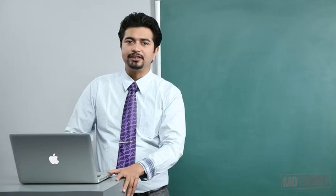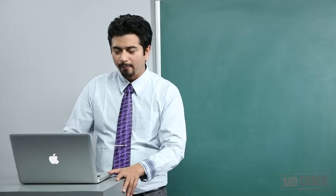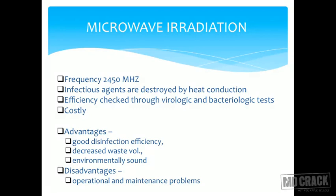Coming to the next method — microwave irradiation. As you know, we use microwaves in our households for cooking food. The frequency used for disinfection is 2450 MHz. Infectious agents are destroyed by heat conduction — they are heated and thus killed. Efficiency has to be checked through virological and bacteriological tests repeatedly, so you have to keep an eye on the efficiency of microwave irradiation. And of course, it is costly.